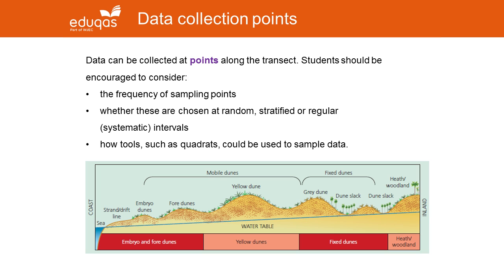Students should also be involved in deciding which pieces of equipment they're going to use and how to use them, so that the data is collected reliably. For example, in a sand dune ecosystem you may be using quadrats, anemometers, and clinometers to measure slope angles.